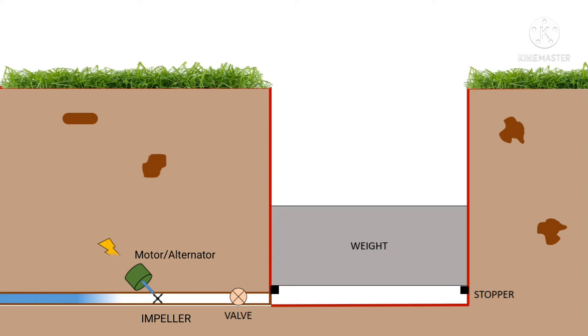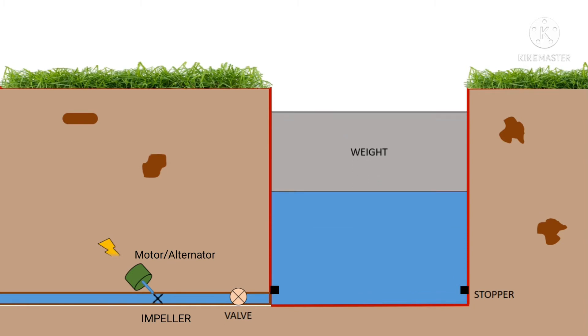It consists of a vertical cylinder fitted inside the ground and a piston or weight which presses the fluid. The impeller is coupled with a motor alternator.